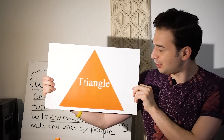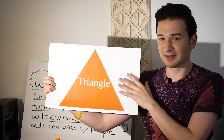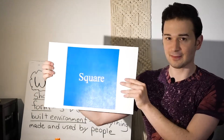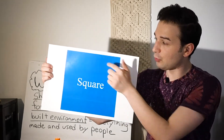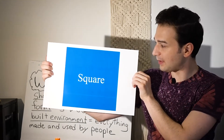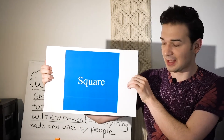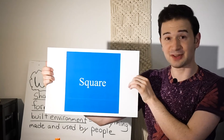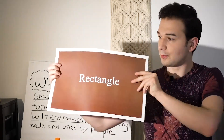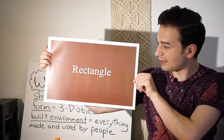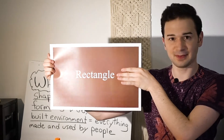A flat 2D shape made of three straight lines would be a triangle. When you have a shape made of four straight lines, this one would be a square because all of these lines are the same length. So when all four sides are the same, that's a square.